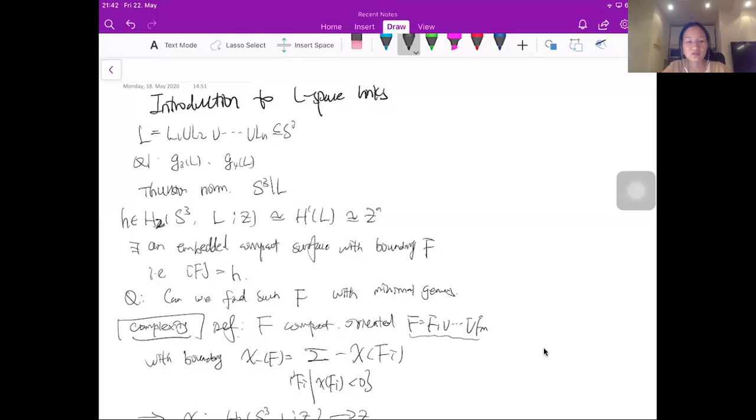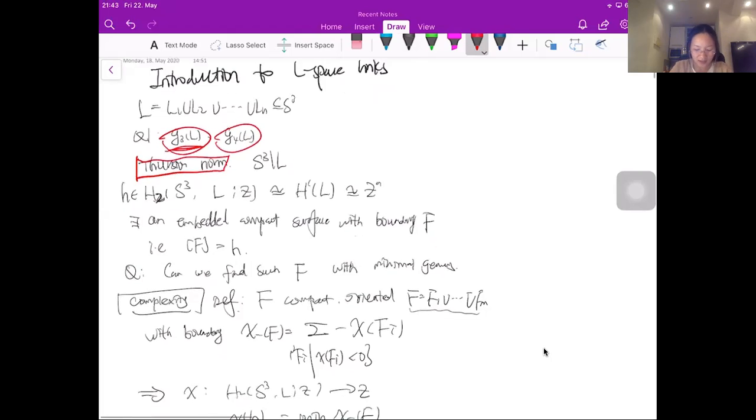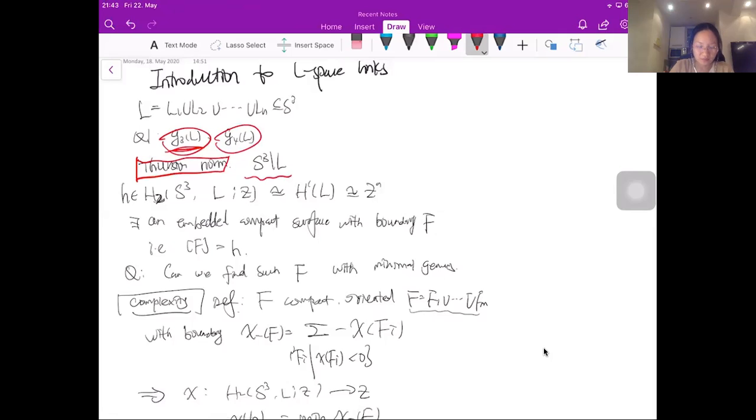For example, we can ask what do we ask for the knot? We can ask the 3-ball genus or 4-ball genus of the link. I haven't said clearly about the definition for this G₃(L) or G₄(L), but this is very similar to the case of the knot. You can ask whether you can find a Seifert surface with boundary of the link in S³, or you can find a surface embedded inside B⁴ with boundary L, and among all these candidates, you want to find the minimal genus one. But let me explain this question more clearly. Instead of saying G₃(L), actually, we can talk about a more general concept, which is related to the Thurston norm.